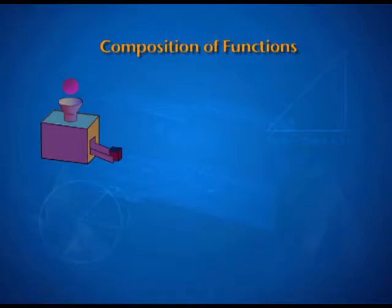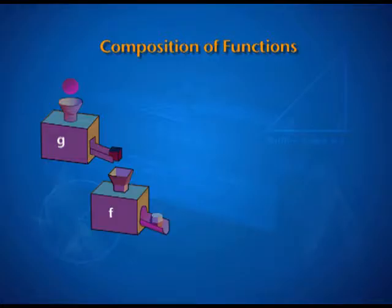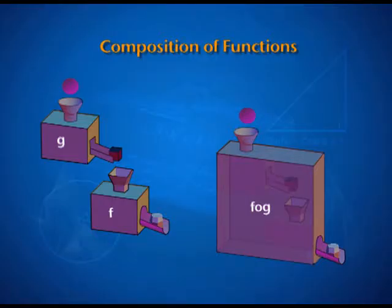Composition of functions can be very well understood if we look at a pair of function machines. Here we have a function machine G whose input is a ball, a sphere, and the output results in a cube. This output, when fed into the function f, results in an output of a faceted ball. Together they can be expressed as a big function machine where a ball is dropped in and it results in an output of a faceted ball.